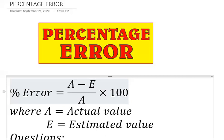You can represent your letters with whatsoever suits you. But for the benefit of this class, we are representing A to be the actual value and E to be the estimated value. So whenever you see A in our formula, it means actual value, and whenever you see E, it means estimated value. So let's dive straight into solving some of these questions.